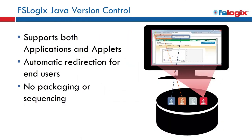The next module is Java Version Control. It allows you to run multiple versions of Java runtimes on the same platform and assign both applications and applets to the different runtimes. It provides automatic redirect for end users when using different Java runtimes within the same session, without requiring any packaging or sequencing.